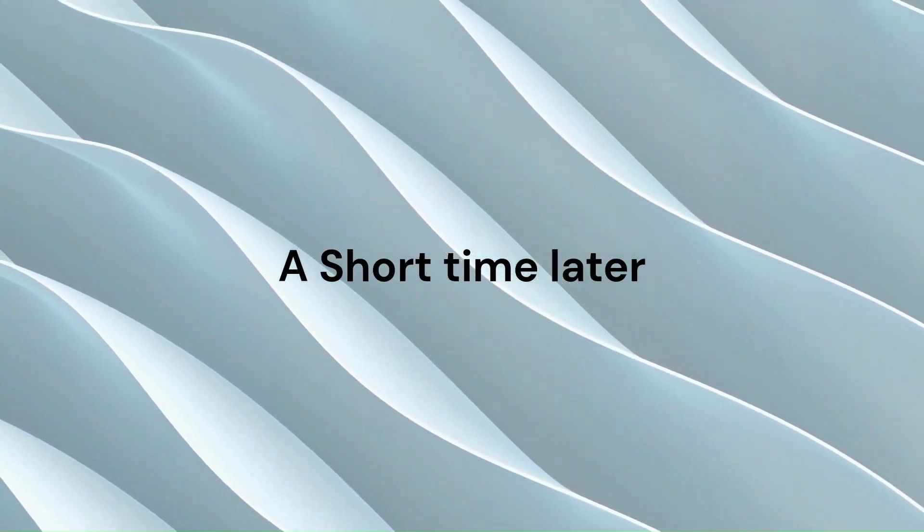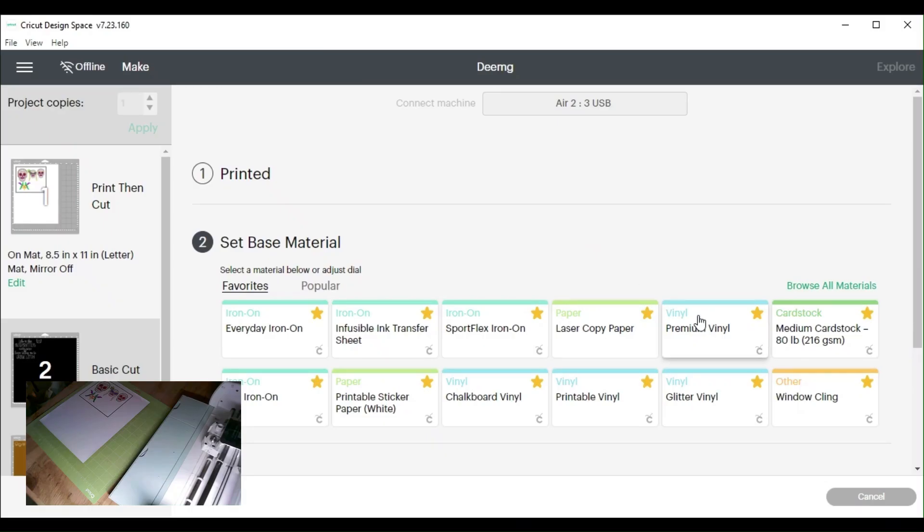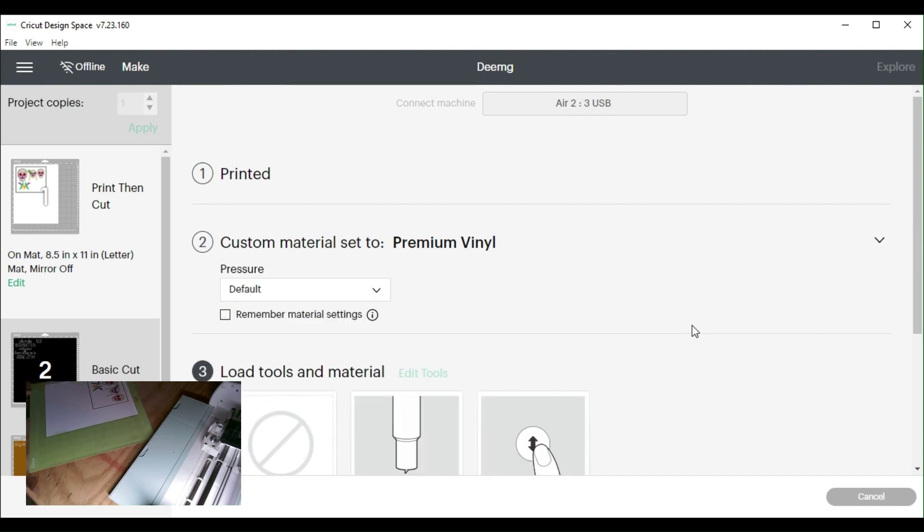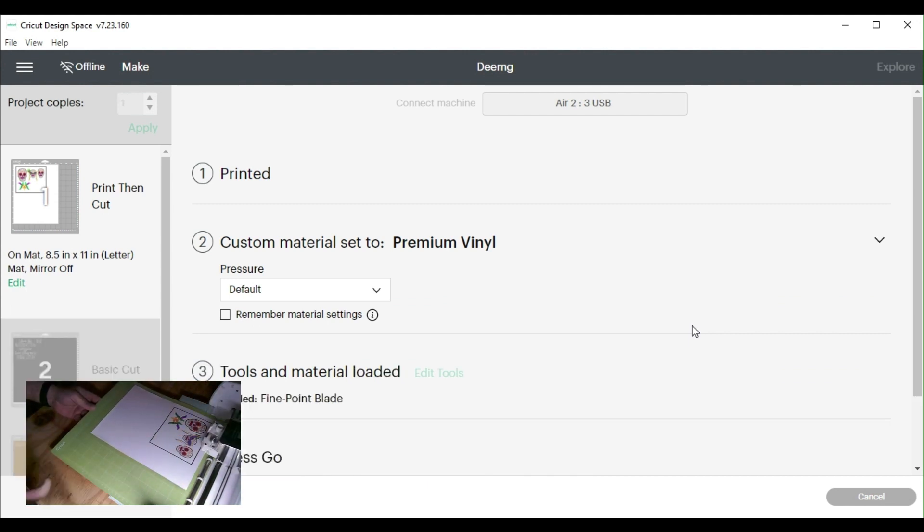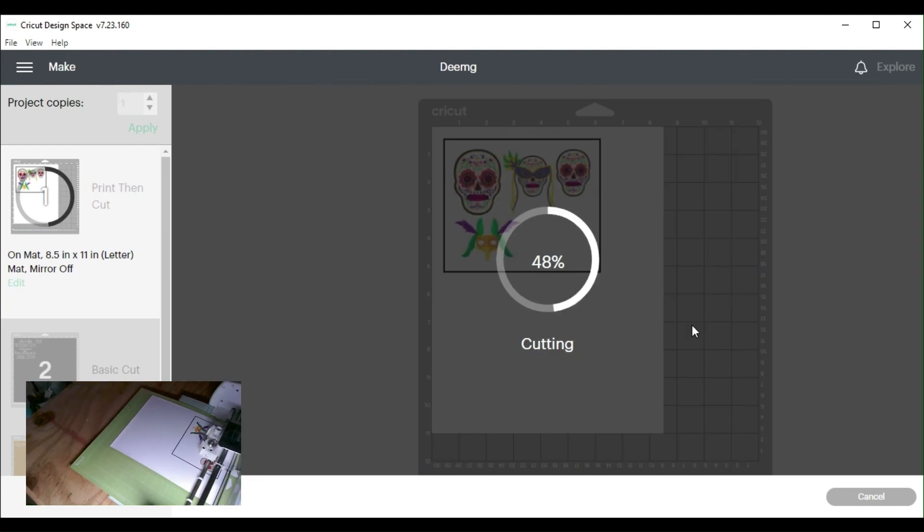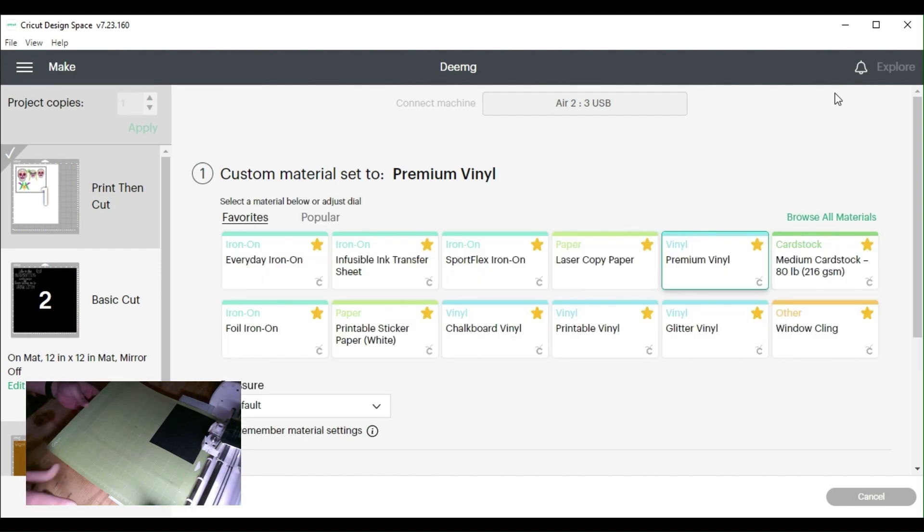Short time later, getting everything set up on the Cricut machine. I didn't show the printing process - the first few decals are print then cut. I printed them off on an inkjet printer on printable vinyl. Loading it up, now it's cutting it for me, unloading, putting the next set in, cutting it up.